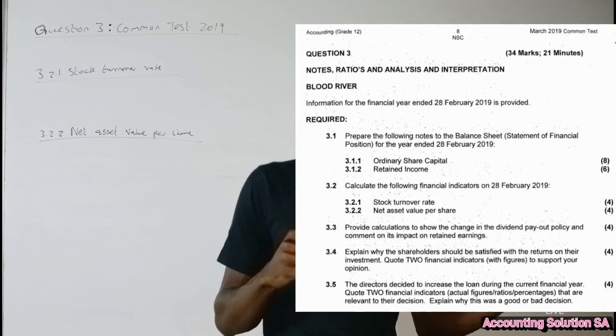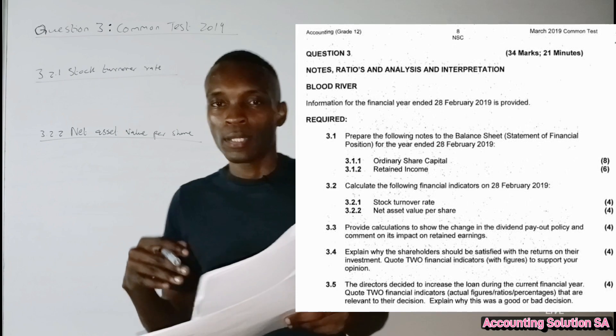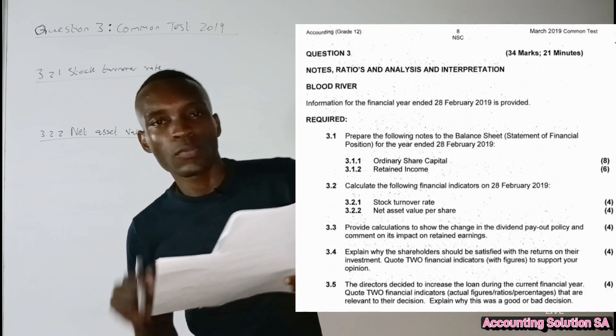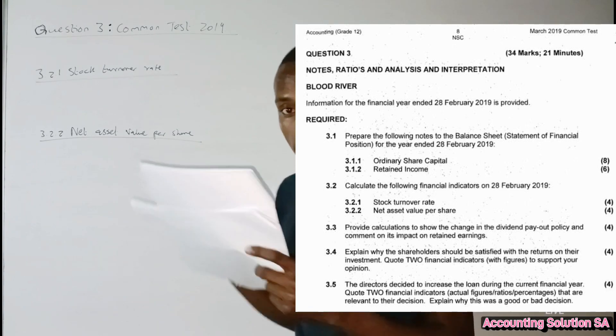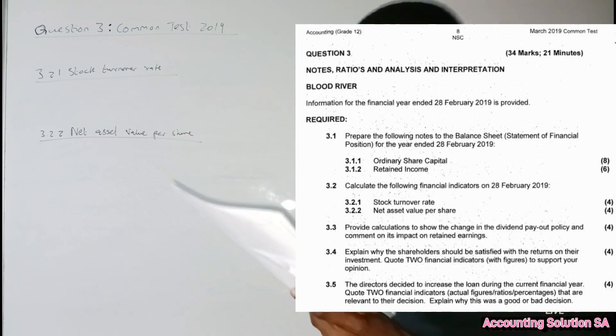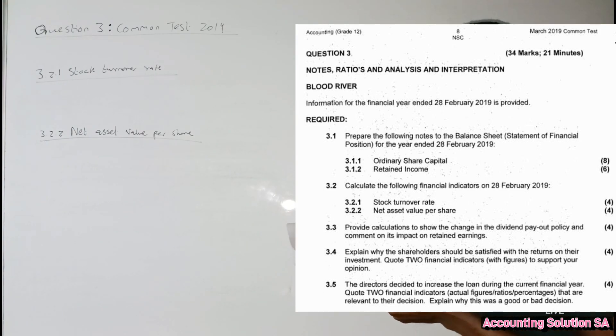But I left the part for ratios that is related to company. So let's do it for this video so that you can gain all the knowledge that you need when you write your test or examination. It was 3.2. 3.1 was covered - you can check on the playlist for this video.